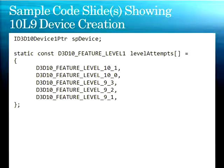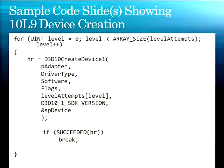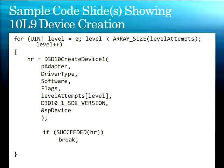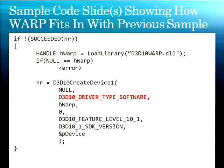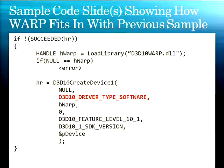We're going to build on the code slides I just showed. You've seen these different feature levels for the create device call. We iterate through here, and if none of those succeed, we never break out of the loop and we won't have successfully created the device. So the last thing we do is: if we didn't have success before, we just create a D3D10 driver type software. This is how the code looks if you try to run this with the M3 build.